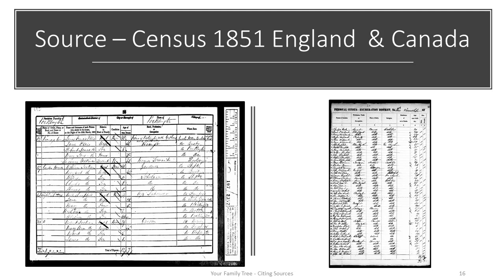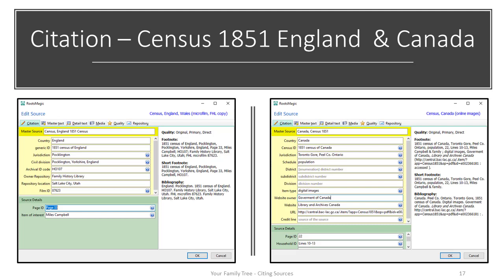From the census records you have the information needed to complete each citation. I would locate the two census templates in RootsMagic — one for England 1851 and one for Canada 1851. As you can see from the census templates, I use the census record from the previous slide to complete the citation. The repository information is recorded in RootsMagic, and I have a couple of slides to show the repository information and the menu.